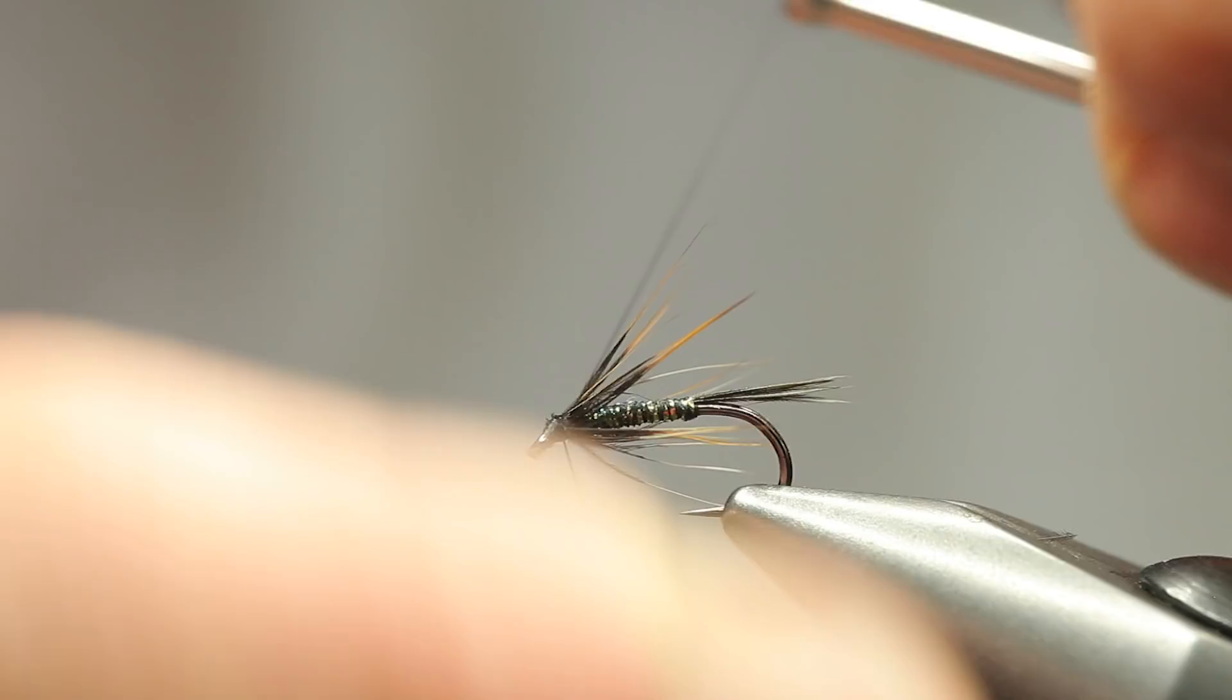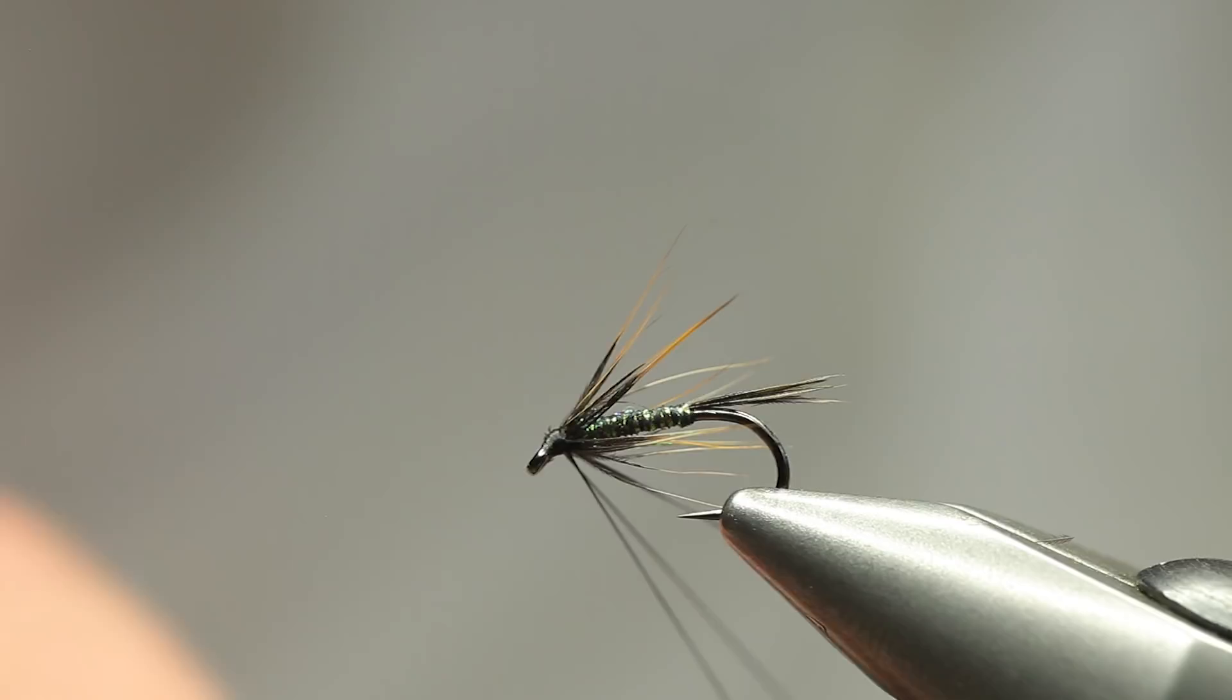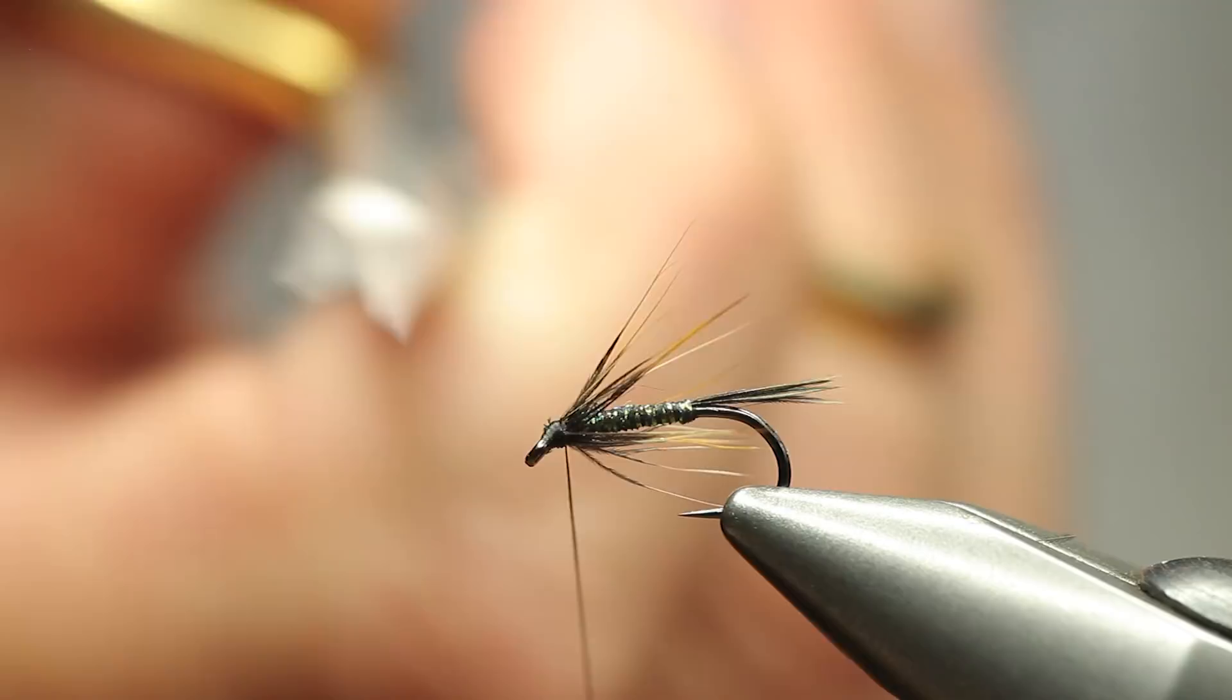Whip finish. Drop a varnish on top, and then fish this as part of a team, two or three fly cast. You can fish it in the middle or the top dropper, really effective for those spooky fish.